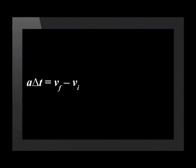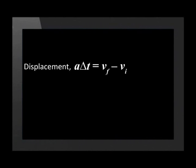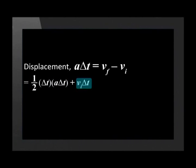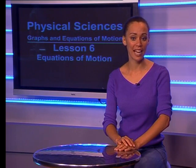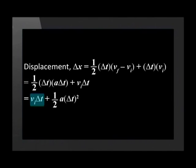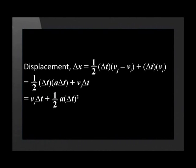From our previous equation, we know that a times delta t equals v_f minus v_i, so we substitute this into the equation. Therefore, delta x equals half times delta t times a times delta t plus v_i times delta t. Multiplying this out, we get delta x equals v_i times delta t plus one-half a times delta t squared. This is the second equation of motion.